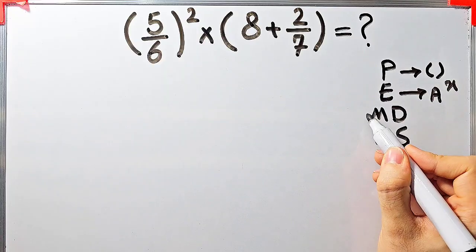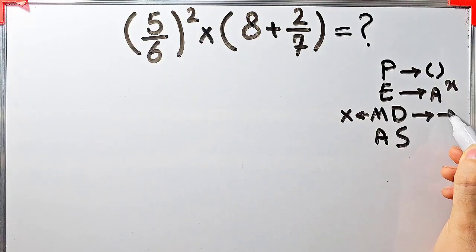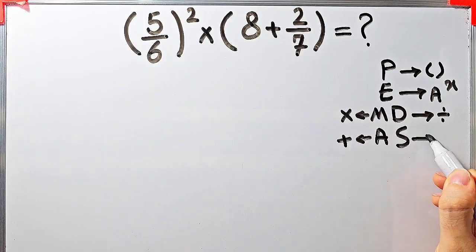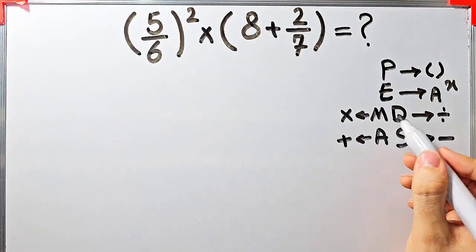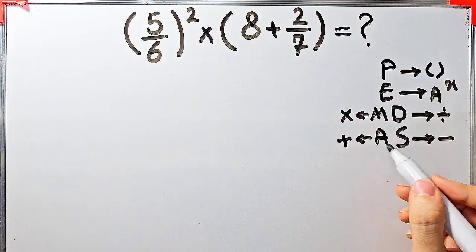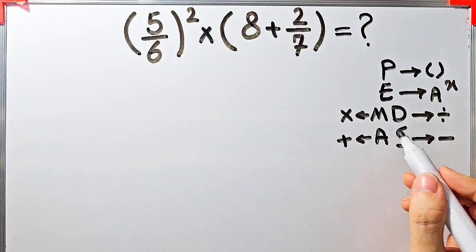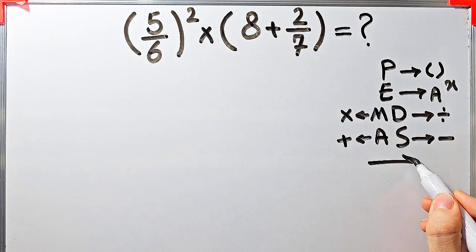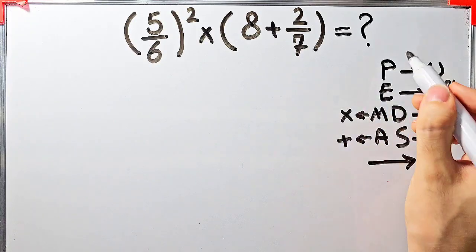M stands for multiplication, D stands for division, A stands for addition, and S stands for subtraction. Multiplication and division have the same level of priority; also addition and subtraction have the same level of priority. When we have both in an expression, we start from the left and simplify the question according to the PEMDAS rule.